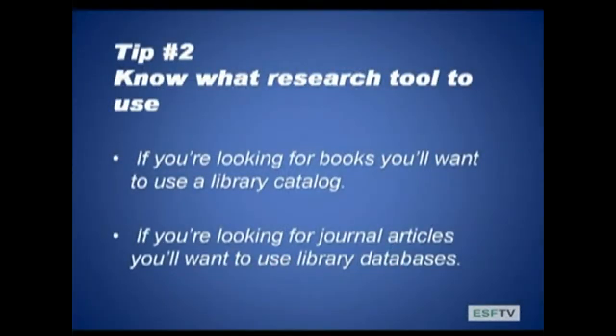Tip number two is know what research tool to use. If you're looking for books, you'll want to use a library catalog. If you're looking for journal articles, you'll want to use library databases. Libraries have different kinds of research tools for different reasons. Most libraries have a library catalog for searching books, journal titles, videos, and other kinds of material. They also have journal article databases, which search inside the journals. You'll want to check with your library to see what's the right tool to use to find what you need.